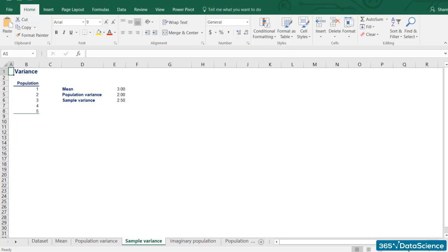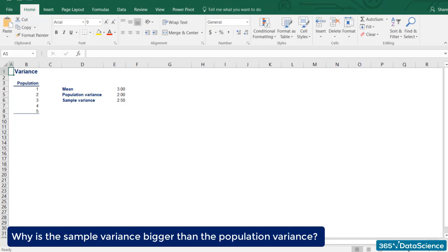To conclude the variance topic, we should interpret the result. Why is the sample variance bigger than the population variance? In the first case, we knew the population. That is, we had all the data and we calculated the variance.